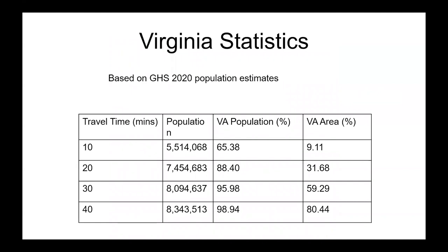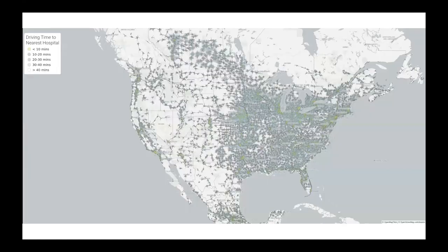Accounting for population density, the metrics look a little more optimistic. We can see that almost 65% of the Virginia population is within 10 minutes of a hospital, and around 99% is within 40 minutes of one. I then expanded this approach to all of North America using the North America Geofabrik extract. It's hard to see at this zoom level, which is why it's important to have an interactive visualization where you can zoom and pan around the map.